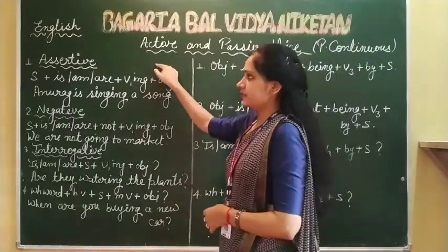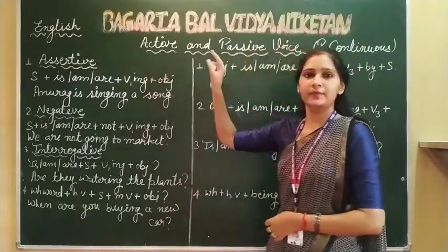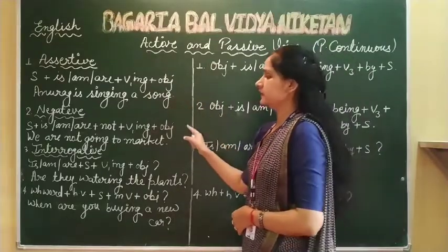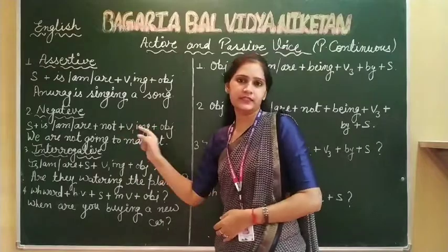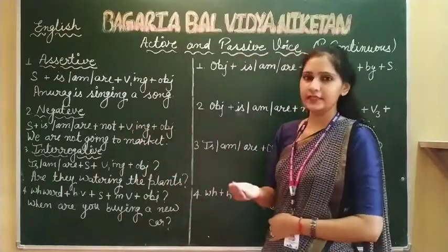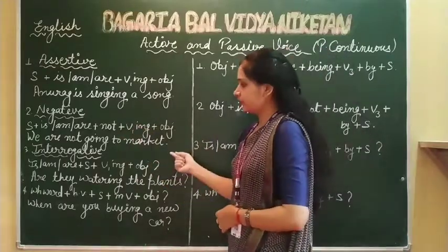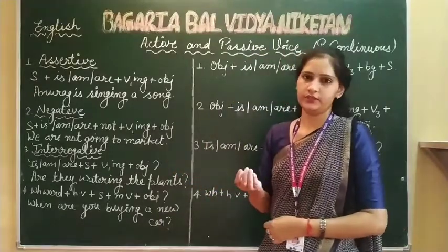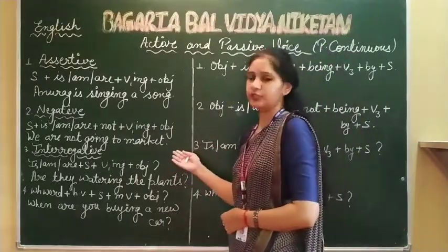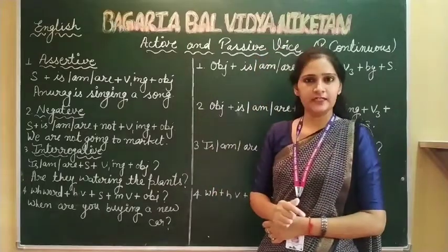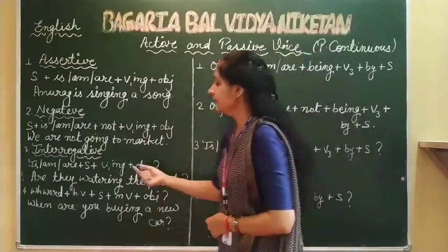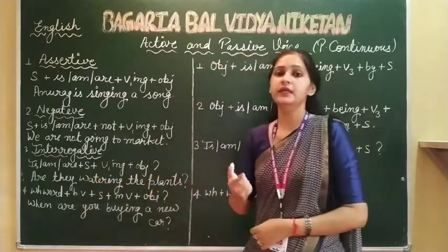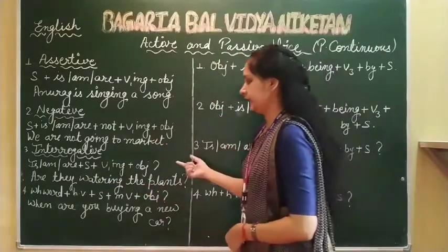Assertive sentences are those where you put full stop mark at the end. Negative sentences are those where you use 'not' - the sentence tells us what is not happening. Interrogative sentences are those where you put question mark, or when someone asks you a question. Interrogative negative sentences have 'not' placed after the subject, giving negative meaning in interrogative form.